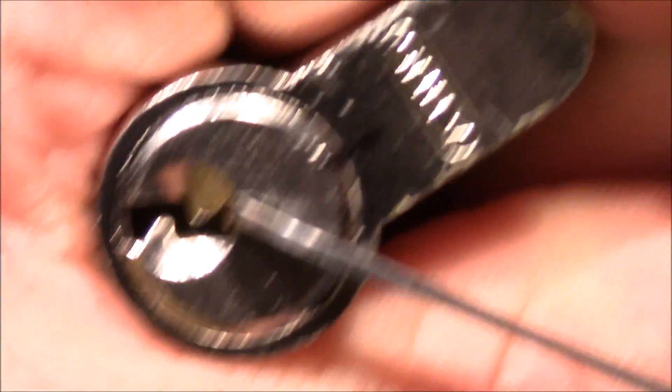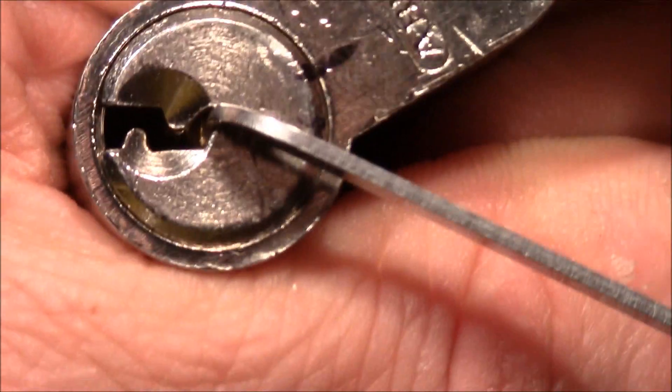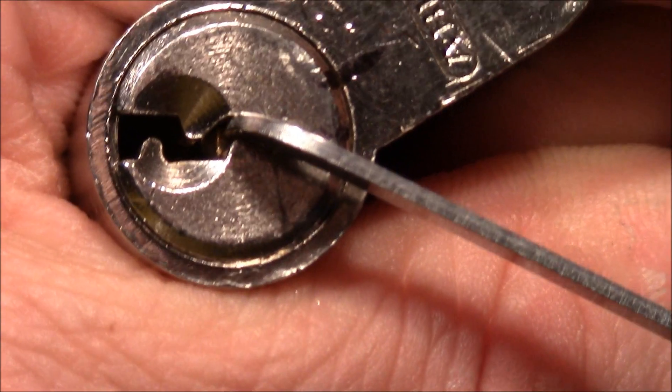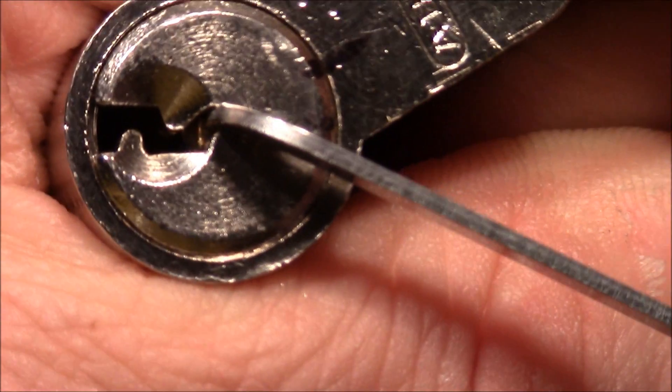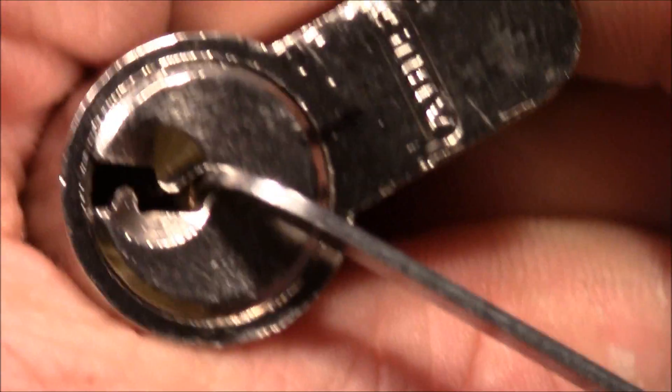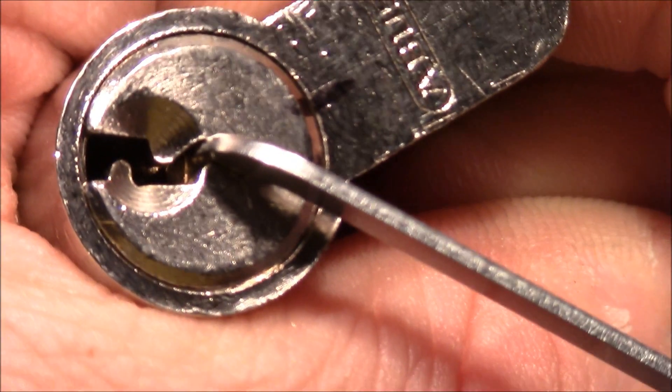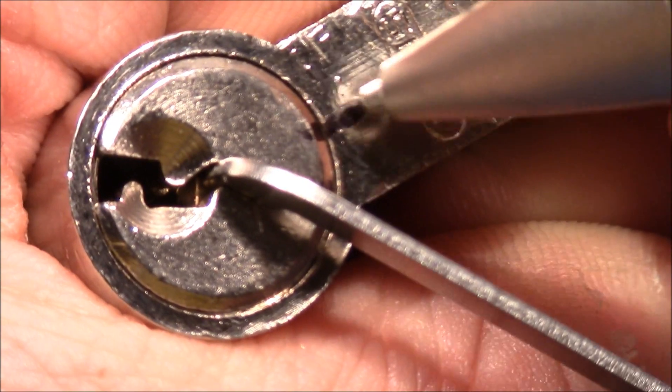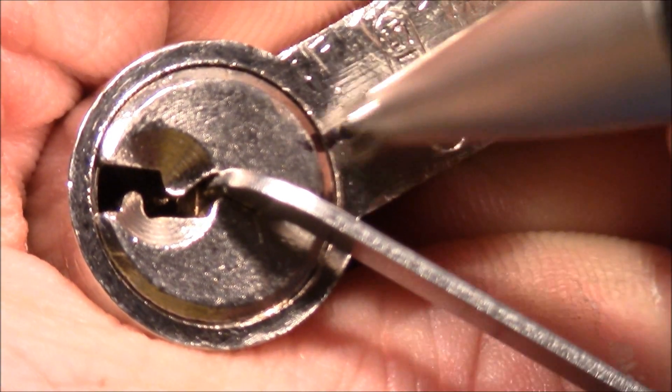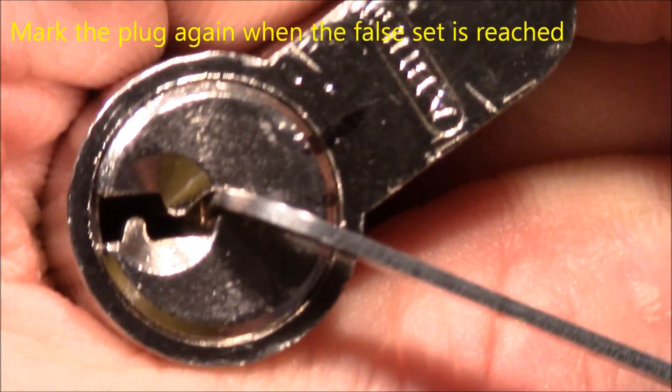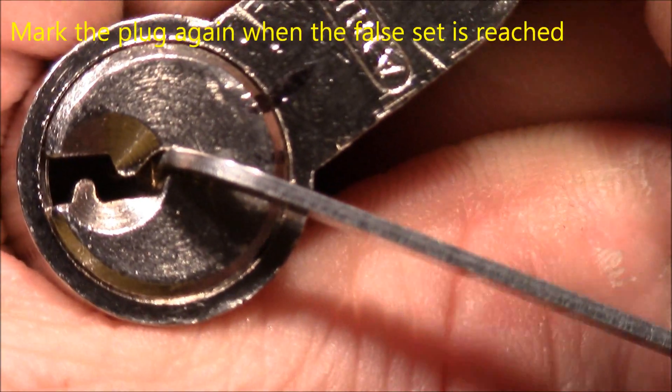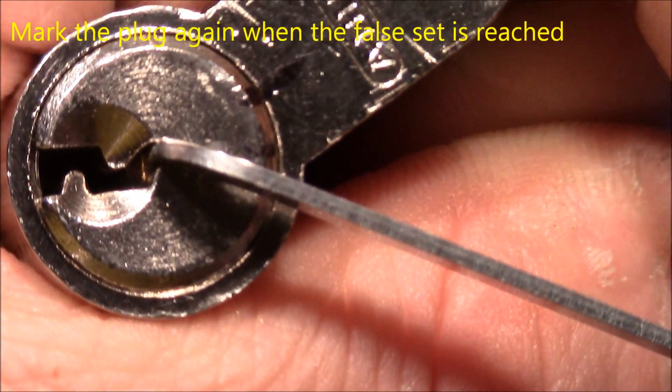So here we are. We are at the deepest possible false set angle. If you have reached your maximum false set, you mark the plug at the same position where you have left the mark at the housing. So now you have two marks at the plug defining the angle of the false set.